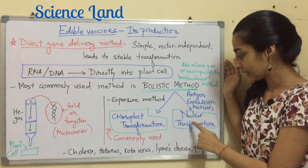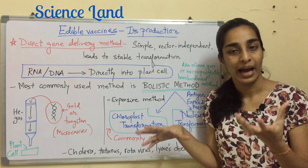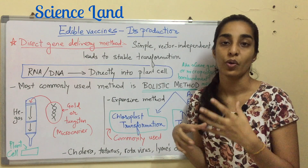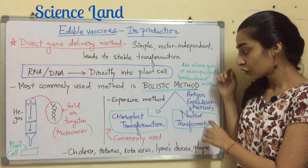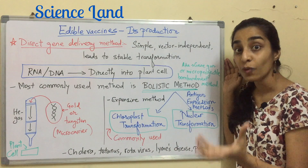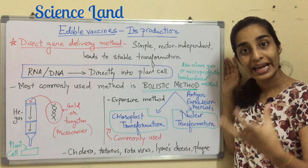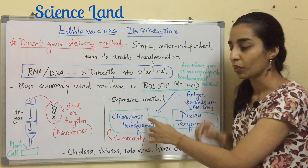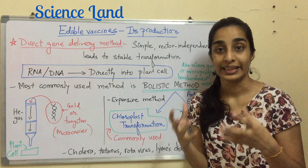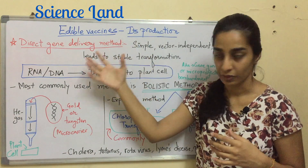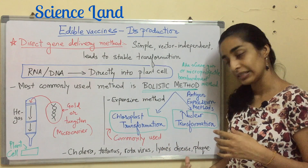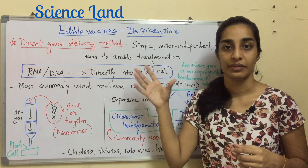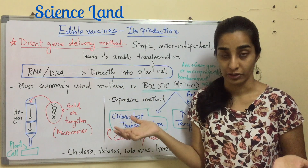The second subtype is nuclear transformation, where the antigen gene is directly incorporated into the nucleus of the plant cell, and transformation takes place via non-homologous recombination. These two types are known as antigen expression methods — the most commonly used being chloroplast transformation. Examples of vaccines produced by direct gene delivery include cholera, tetanus, rotavirus, Lyme disease, and plague.